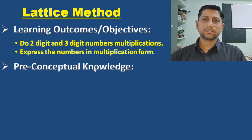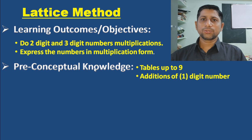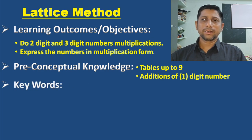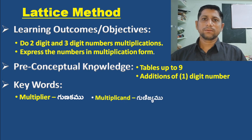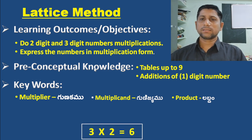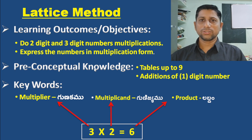Students should have some preconceptual understanding before this topic. They should know multiplication tables up to nine, be able to add single-digit numbers, and know the keywords: multiplicand (gunijamu), multiplier (gunakamu), and product (labdamu). For example, in 3×2=6, three is the multiplier, two is the multiplicand, and six is the product. So: multiplier × multiplicand = product.